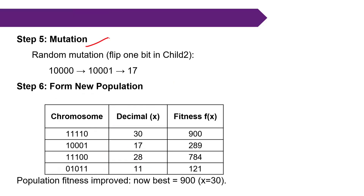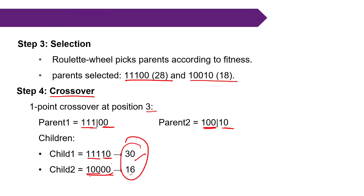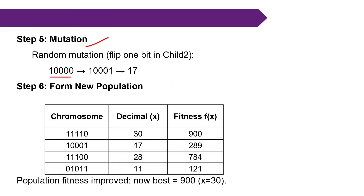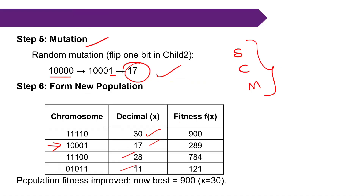Next, mutation is applied. You can flip any bit — there is no restriction. Suppose we take child two and flip one bit; the child two value becomes 17. After completing selection, crossover, and mutation, we update the population table. The new population contains values 30, 17, 17, 28, 11. The highest fitness value is now 900, corresponding to decimal 30.